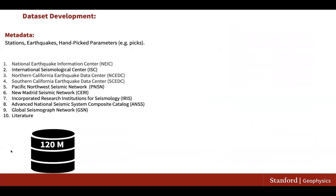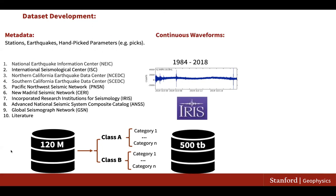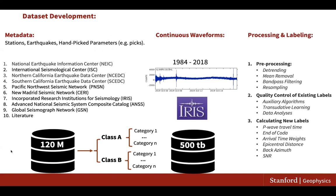We first built a relational database of metadata based on multiple resources. These metadata mainly include information about recording stations, earthquakes, and hand-picked parameters such as P and S wave arrivals. Then we defined different classes and categories, obtained event waveforms from the archive, and performed pre-processing to make them uniform.